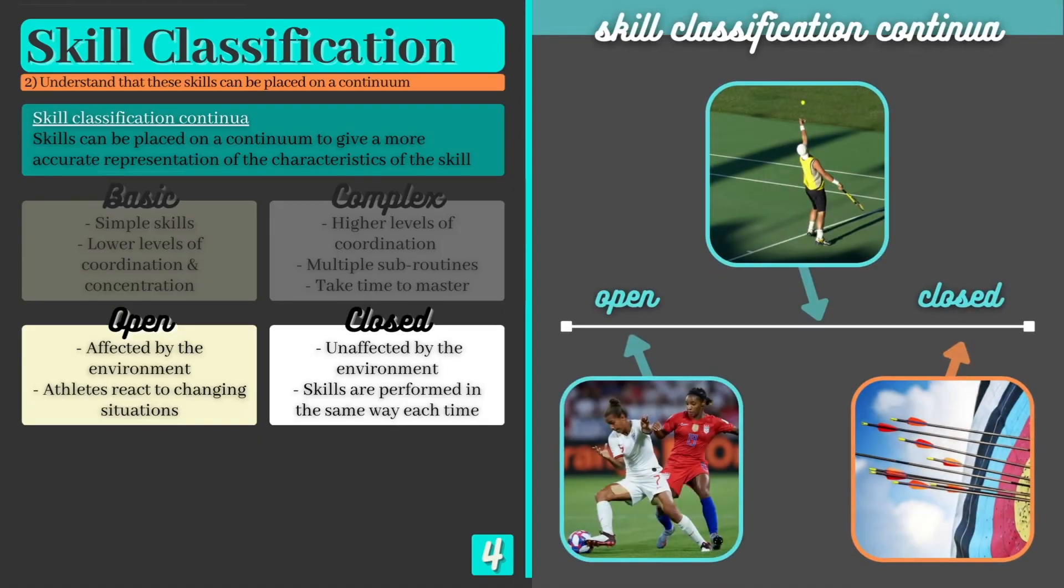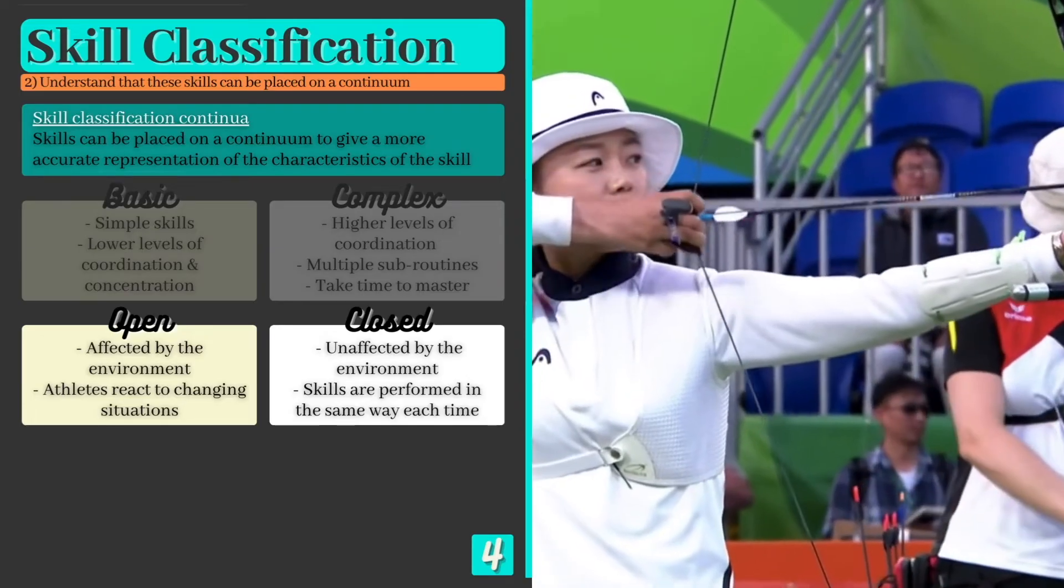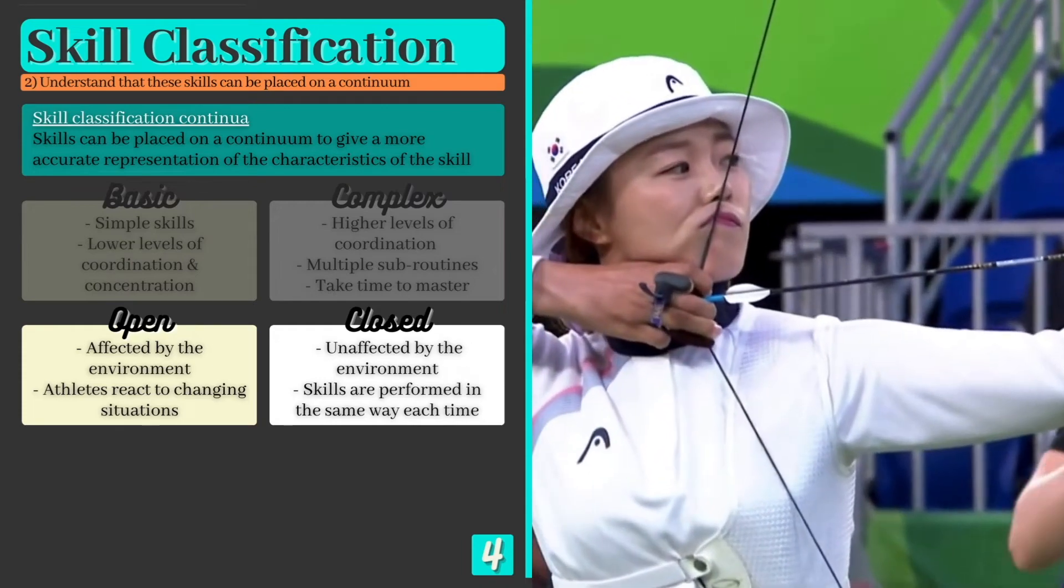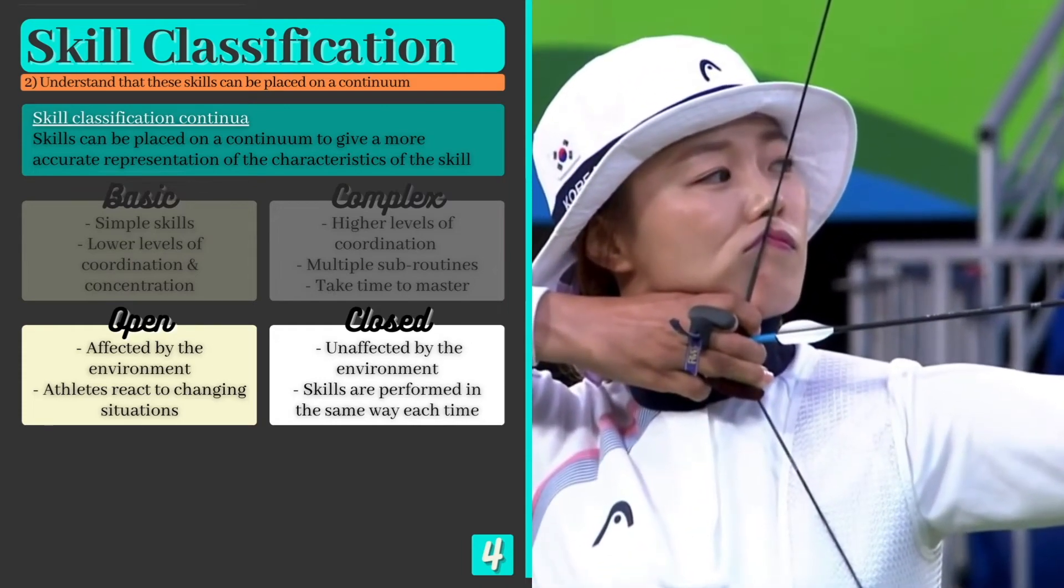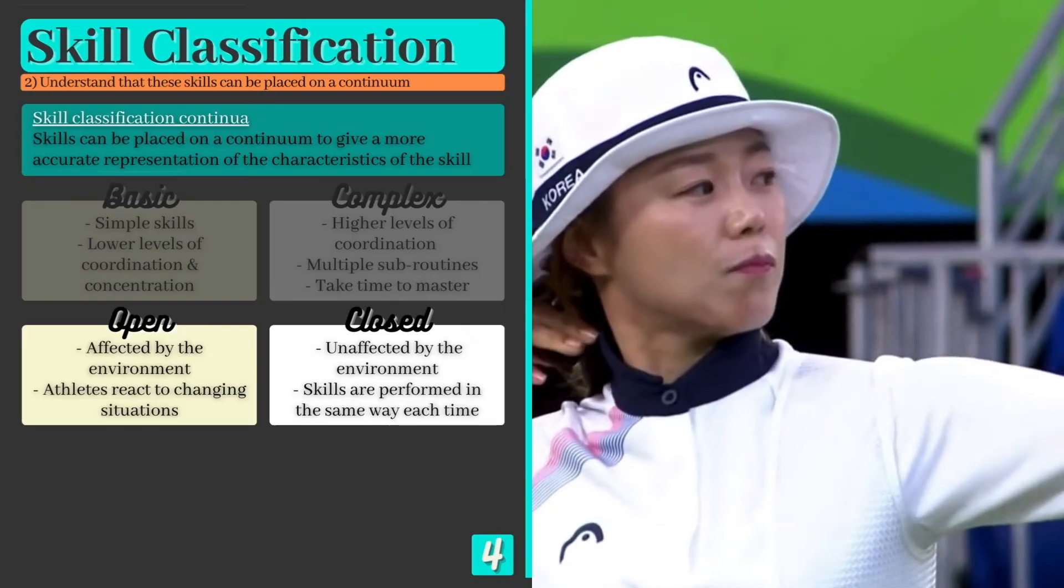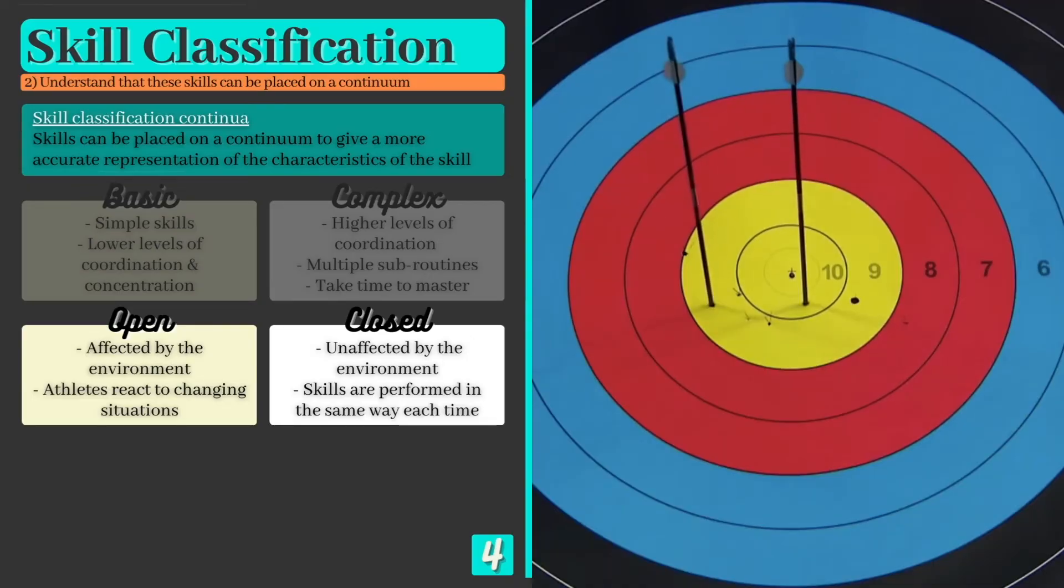Archery can be found towards the closed end of our next continuum as environmental influences are minimal. The scenario doesn't change from one arrow to the next and the skill is performed almost the same way each time. It's not completely closed however, as environmental changes such as the wind may influence how the skill is performed.